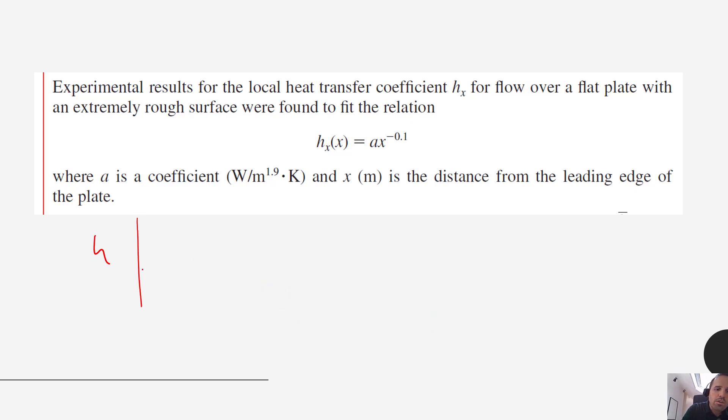So the way that we would go about getting the average h is we would apply this relationship. So h bar, where the bar means average, would be equal to in this particular case 1 over L, where L is the total length of the plate. And we would just integrate this from 0 all the way to the end of the plate and here we would have our h as a function of x dx. We would do this integration from 0 to L.